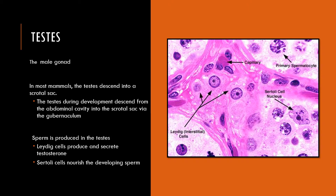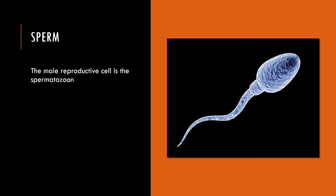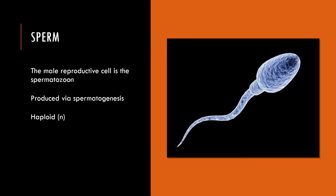Inside the testes is sperm — the male reproductive cell. There are also Leydig cells that produce and secrete testosterone, and Sertoli cells that nourish developing sperm. Sperm, sometimes called a spermatozoan, is produced in the testes via spermatogenesis. The end product of spermatogenesis is a haploid cell — carrying one set of chromosomes. In humans, a diploid set is 46, so a sperm carries half that: 23 chromosomes. It also achieves locomotion via a flagella.